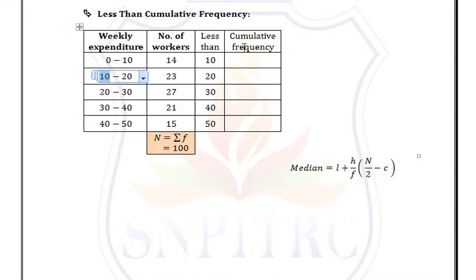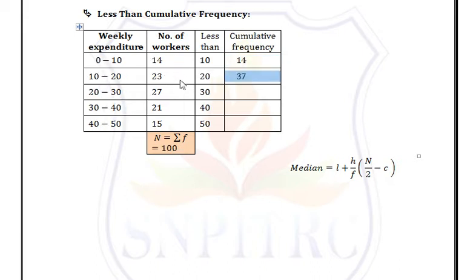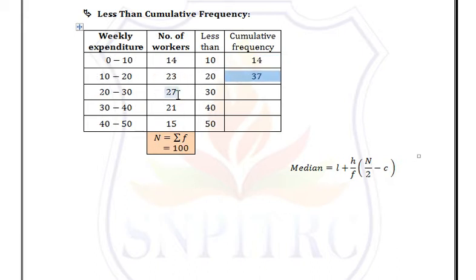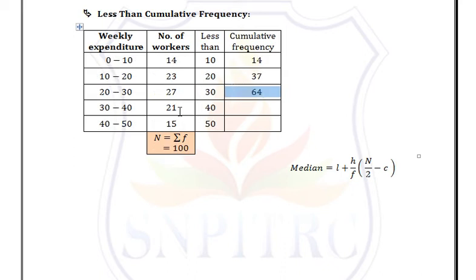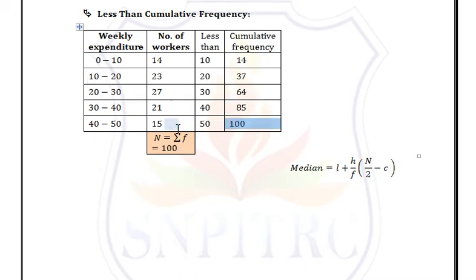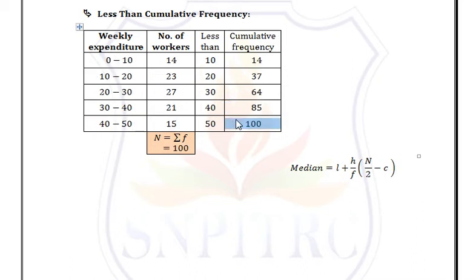Now compute the cumulative frequency. The first value is 14 (default). Then 14 + 23 = 37, then 37 + 27 = 64, then 64 + 21 = 85, and 85 + 15 = 100.